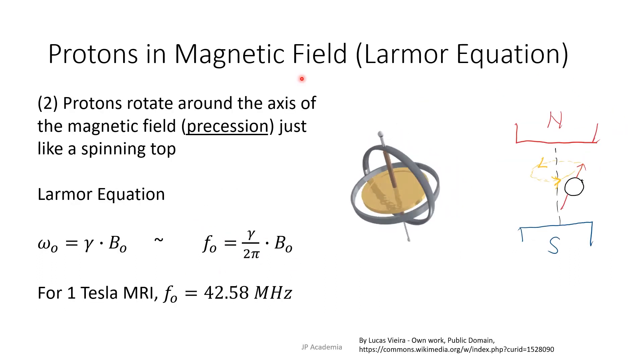Still under the protons in magnetic field, the protons' magnetic moment is induced to rotate around the axis of the magnetic field. This type of movement is called precession. This movement is like a spinning top or a gyroscope as illustrated here in my GIF file.